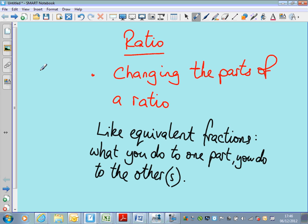The golden rule I would suggest for ratios is in black here that they're very much like equivalent fractions and when you change one part of a ratio, as long as you keep the numbers in proportion by changing the other parts in the same way, then you will not go far wrong.